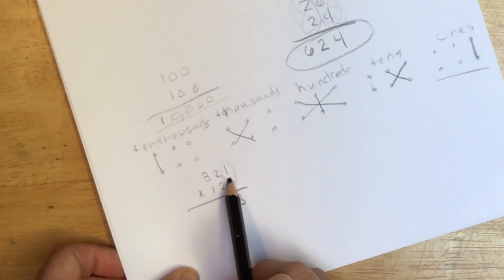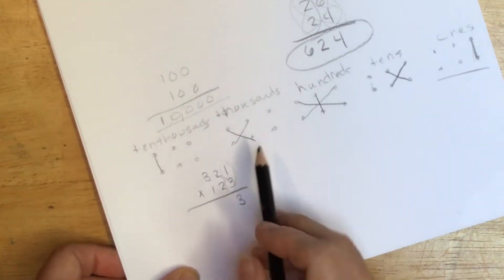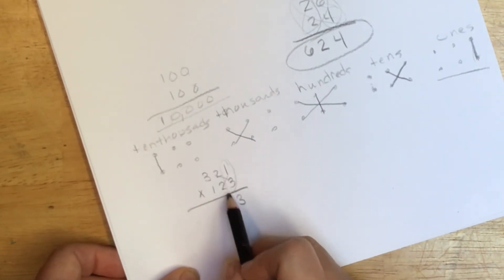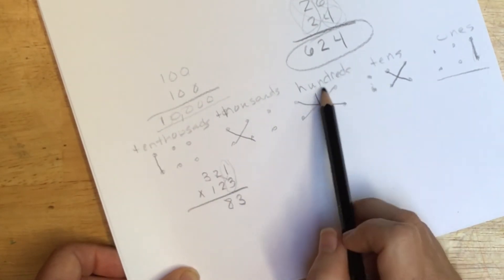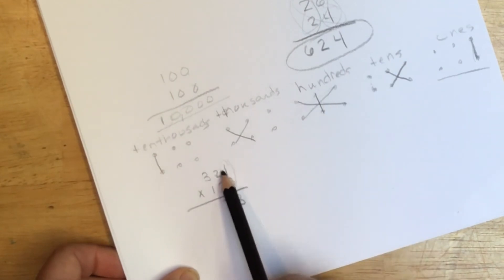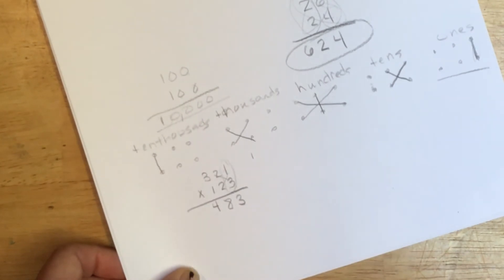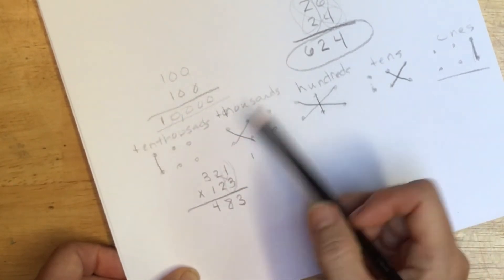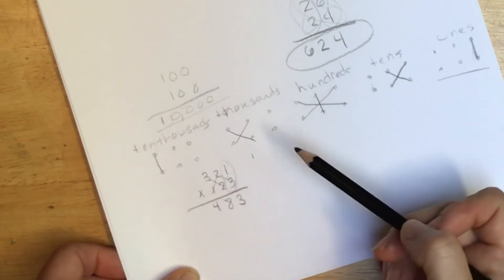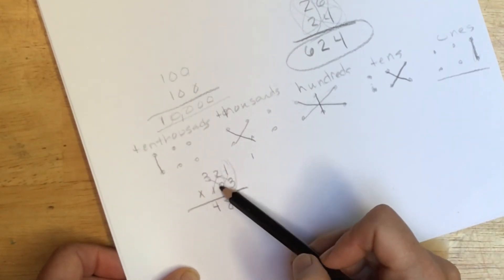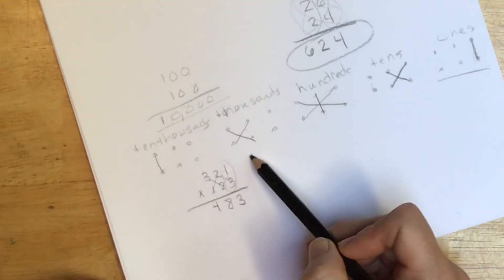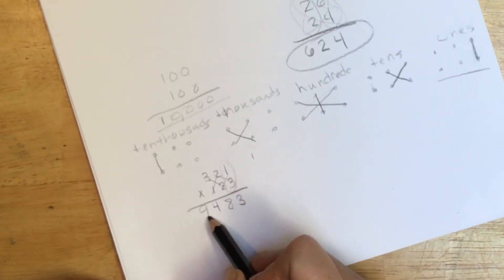To do our hundreds, we're crossing over a little larger, so 100, 900, that gives us 1000, and then 1400. So we're going to put this four here and this other digit to add to our thousands. To do our thousands, we're multiplying these two digits here, so two and six, which is eight, and then we're adding this, which is nine.